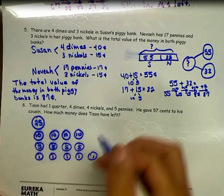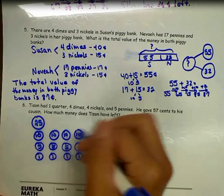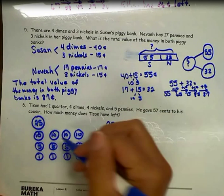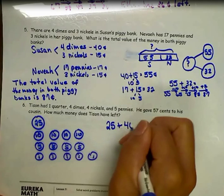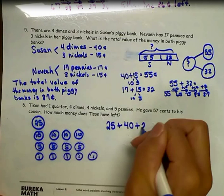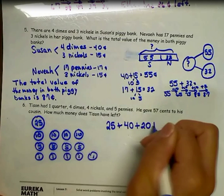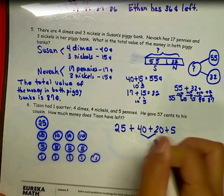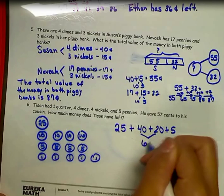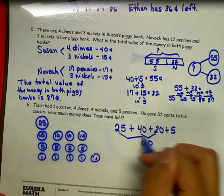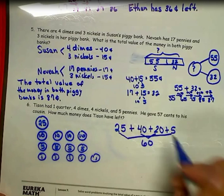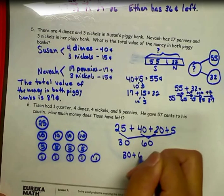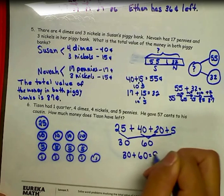He has 1 quarter, 4 dimes, 4 nickels, and 5 pennies. I'm going to add to find the total: 25 cents plus 40 cents plus 20 cents plus 5 cents. 40 plus 20 gives me 60; 25 plus 5 gives me 30. 30 plus 60 equals 90 cents.